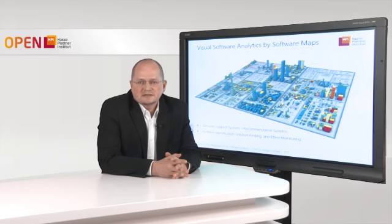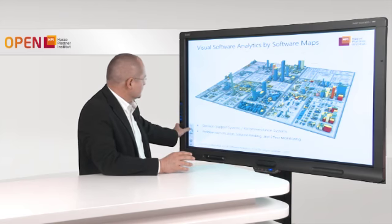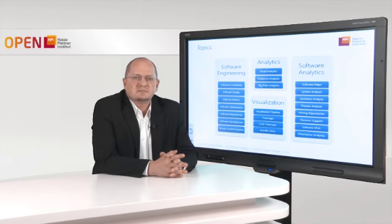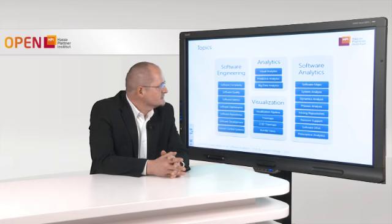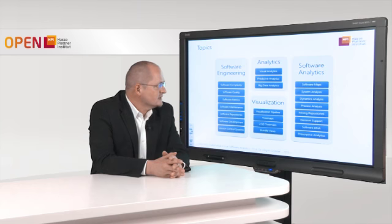The course topics are summarized here. We will have a detailed look into classical topics of software engineering with respect to software analytics, such as software quality, software metrics, and software maintenance in general. We will also investigate key techniques and methods in analytics: big data analytics, visual analytics, and predictive analytics. Additionally, we will cover visualization technology such as tree maps or bundle views, and go into details of software analytics disciplines including system analysis, dynamics analysis, and process analysis.